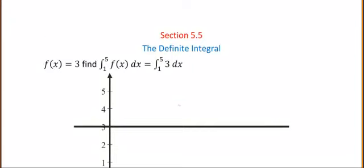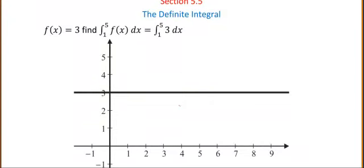All right. Now let's compute. In some instances, we can compute these. Suppose f of x is equal to three. We'd like to compute the definite integral from one to five of f of x dx. So that's going to be f of x is three. So that's going to be the definite integral from one to five of three dx.